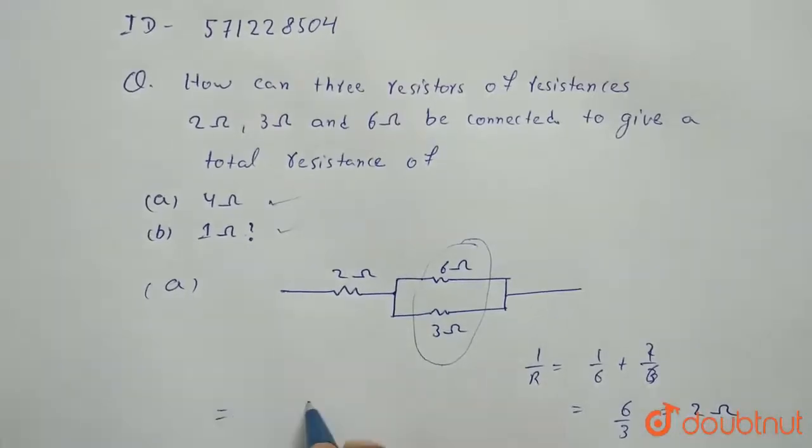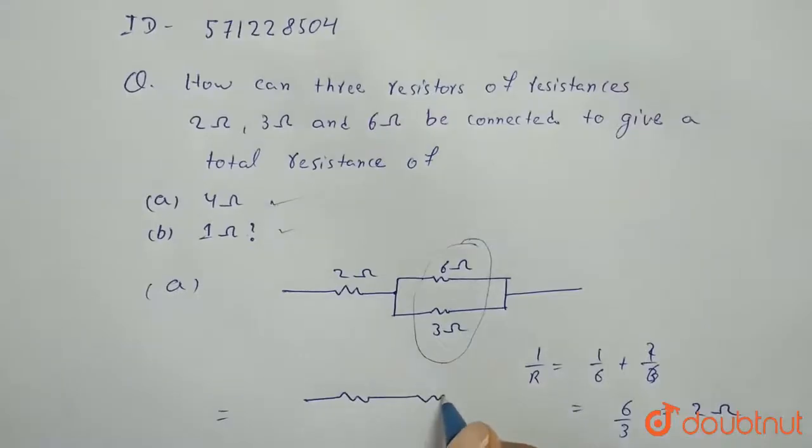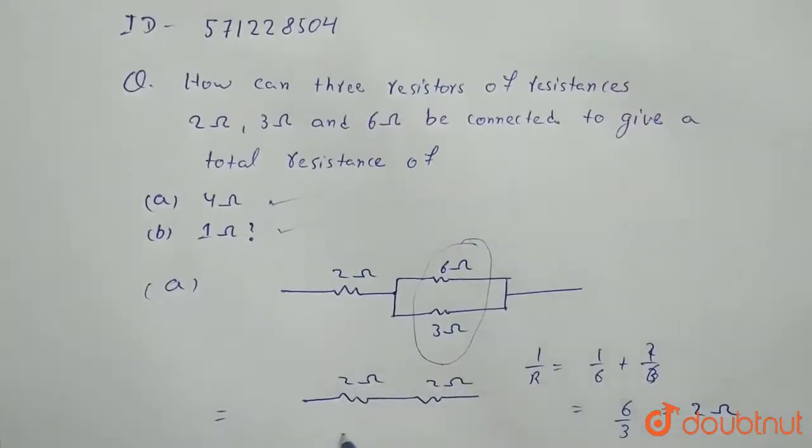So we have 2 ohm plus 2 ohm. So it will give 4 ohm resistance. So R equivalent will be 4 ohm.